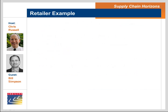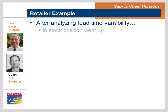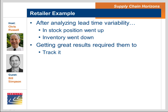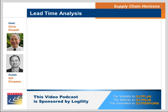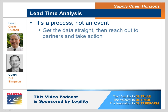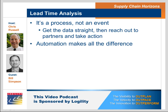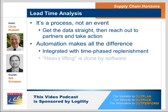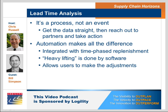We worked with a retailer last year on this specific issue. After working with them and developing what percentage would be applied to the lead times, their in-stock position went up and their inventories went down. It took some time because they had to track it, document it, and talk to their vendors — but that was a huge win for this particular retailer. It's a process, not an event. You sit down, get the data straight, make sure it's correct in the system, and then interface with your vendors to figure out what actions can be taken. Having the ability to do that within your software is a giant win because it's integrated with time-phased replenishment. The heavy lifting is done by the software, allowing users to look at the output and make adjustments. It can be done over and over, and it applies whether you're a manufacturer or a retailer.